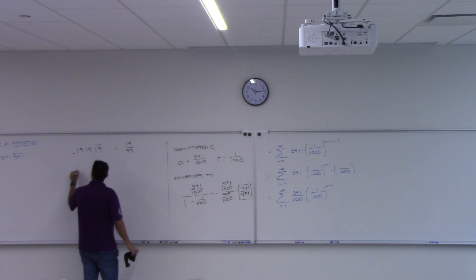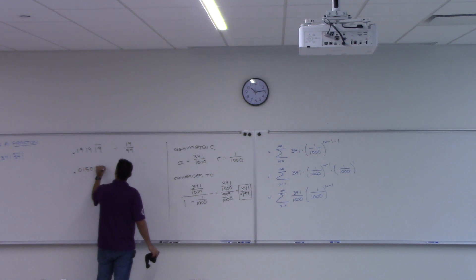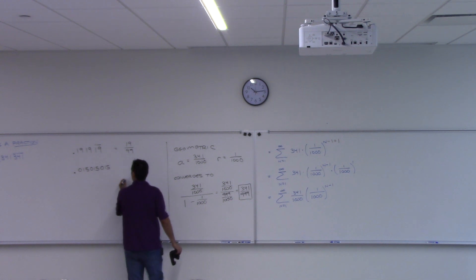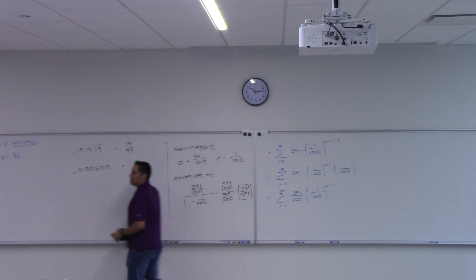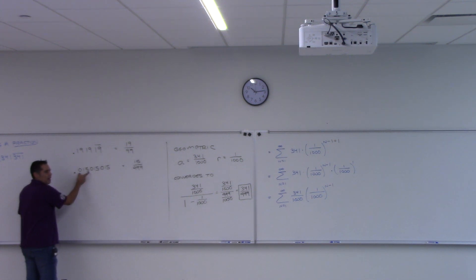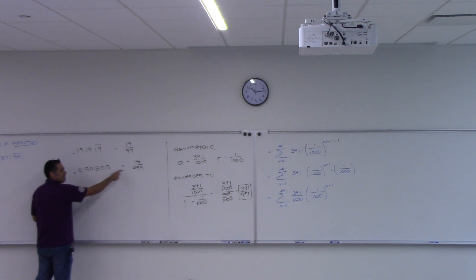And if you have something like 0.015, 015, 015, what do you think that would turn into? 15 over 999. You have to look at how big the group is, right?